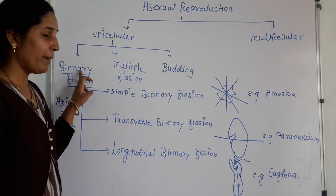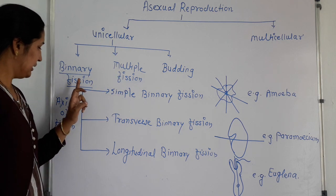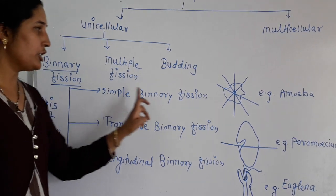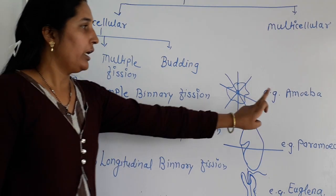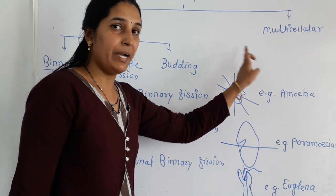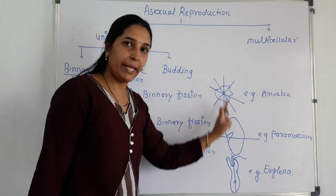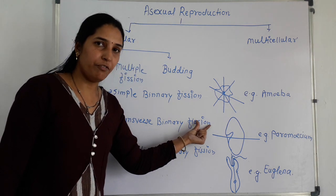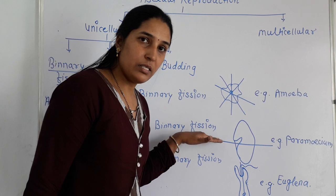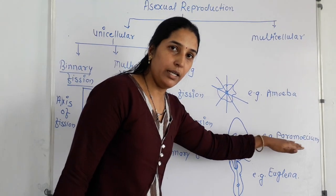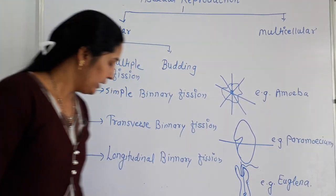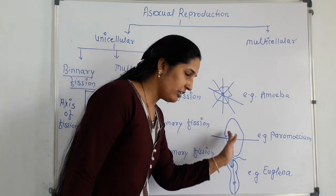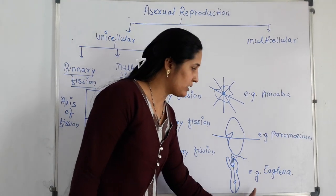In binary fission there are three types based on the axis of division. First, simple binary fission — in amoeba, it divides in any plane because of lack of shape. Second, transverse binary fission — the parental cell is divided horizontally, for example in paramecium. Third, longitudinal binary fission — the parental cell is divided vertically, for example in euglena.